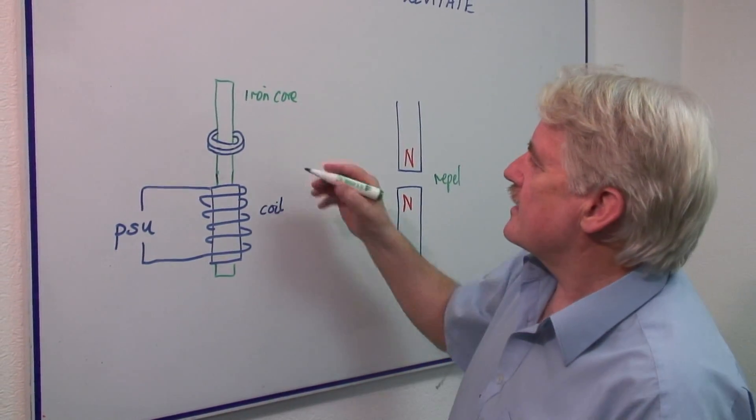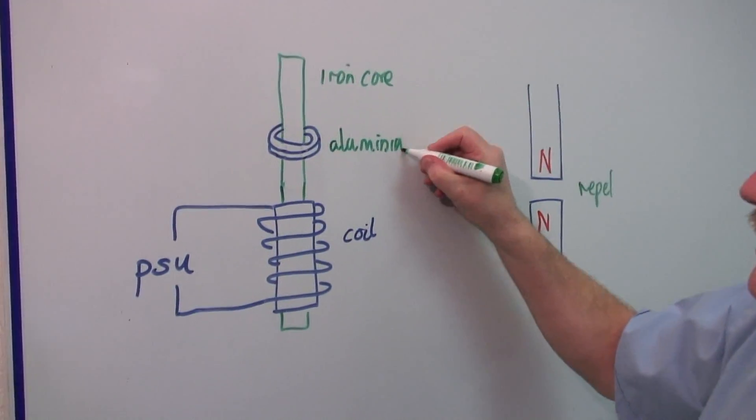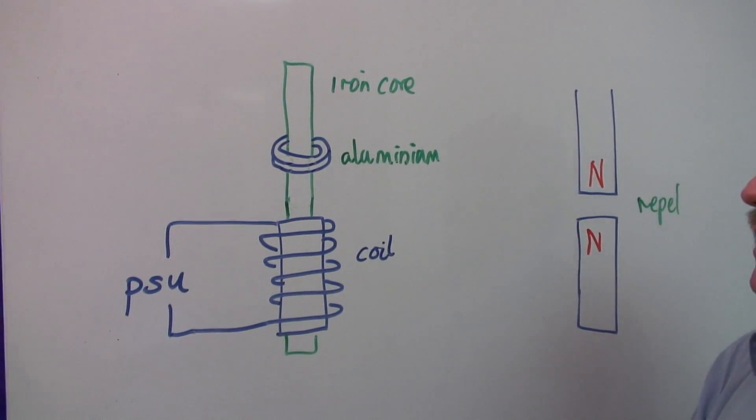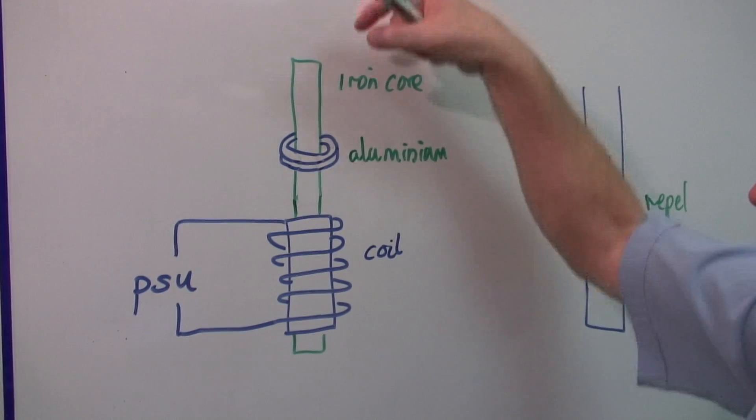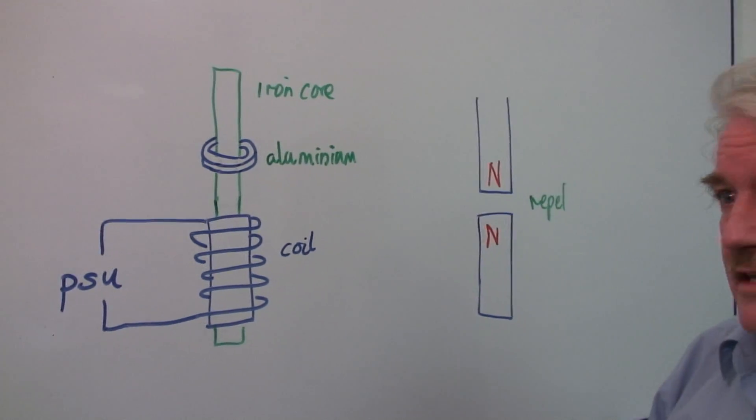Now if I take an aluminum ring, something like this, or a copper ring—but aluminum is very good because it's light—and put it over the iron core, what actually happens is this.